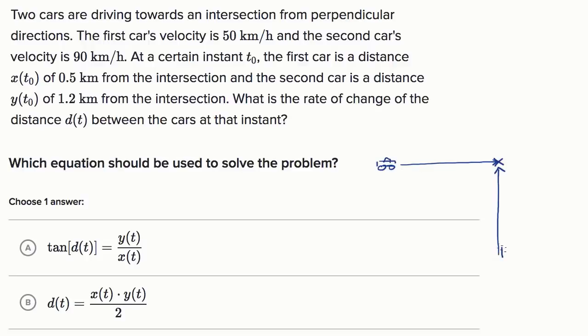I should have maybe done a top view. This is a square representing the car, and it is moving in that direction. Now, they say at a certain instant t₀, so let's draw that instant.